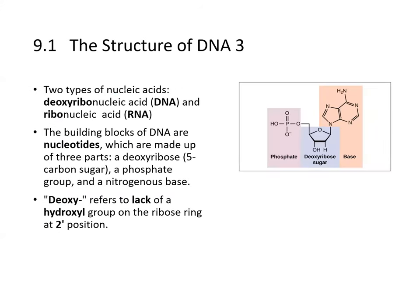There are two types of nucleic acids: deoxyribonucleic acid and ribonucleic acid. The building blocks of DNA are nucleotides, which are made up of three parts: deoxyribose, a phosphate group, and a nitrogenous base. The deoxyribose refers to the lack of a hydroxyl group on the number two carbon of the ribose sugar.